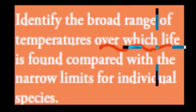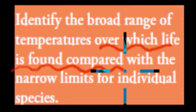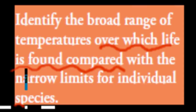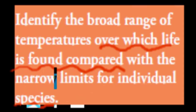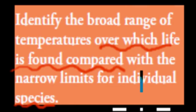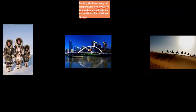So we can find life in the freezing cold and in the really warm temperatures, but for individual species — for example, the polar bear — we can only find that in the cold areas. We usually can't find it in warmer areas. So we're talking about why this happens.